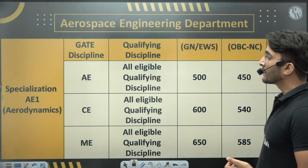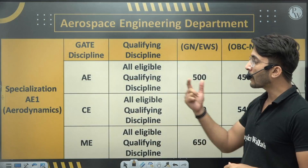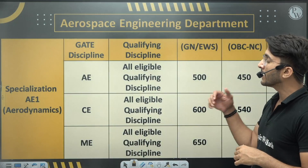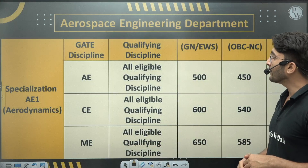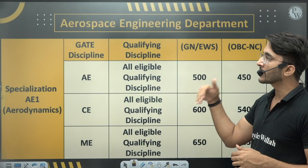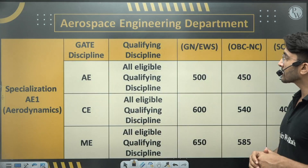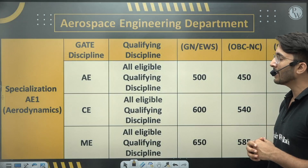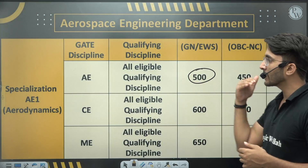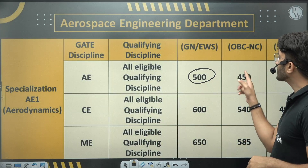For the first M.Tech specialization — Aerodynamics — available in IIT Bombay, you need a GATE score in AE, CE, or Mechanical. Students from any branch of engineering who have completed their graduation are eligible. Based on past year data, 500 is the minimum GATE score required for General/AWS category. For OBC-NCL the cutoff is 450, and for SC/ST the cutoff is 333.